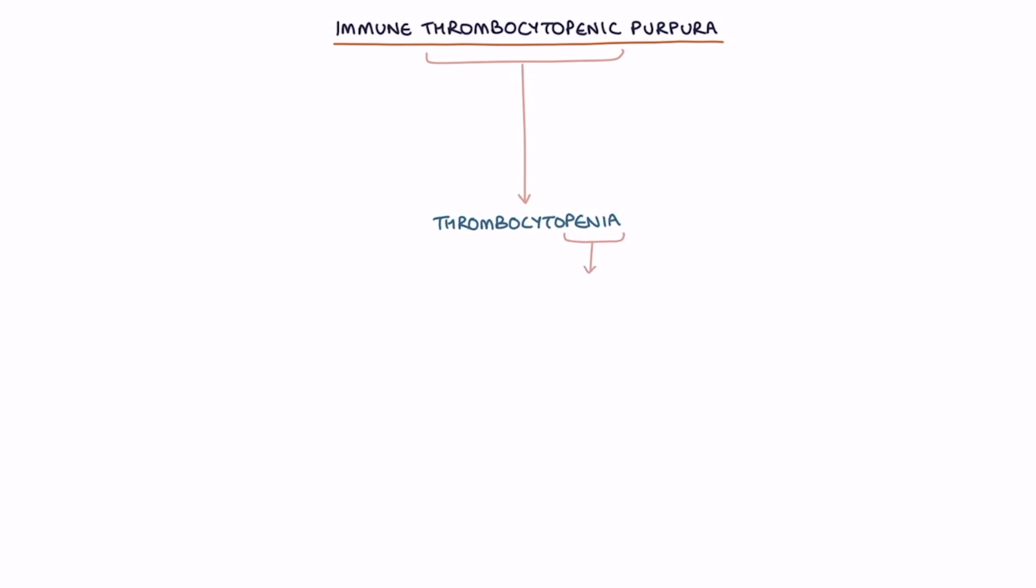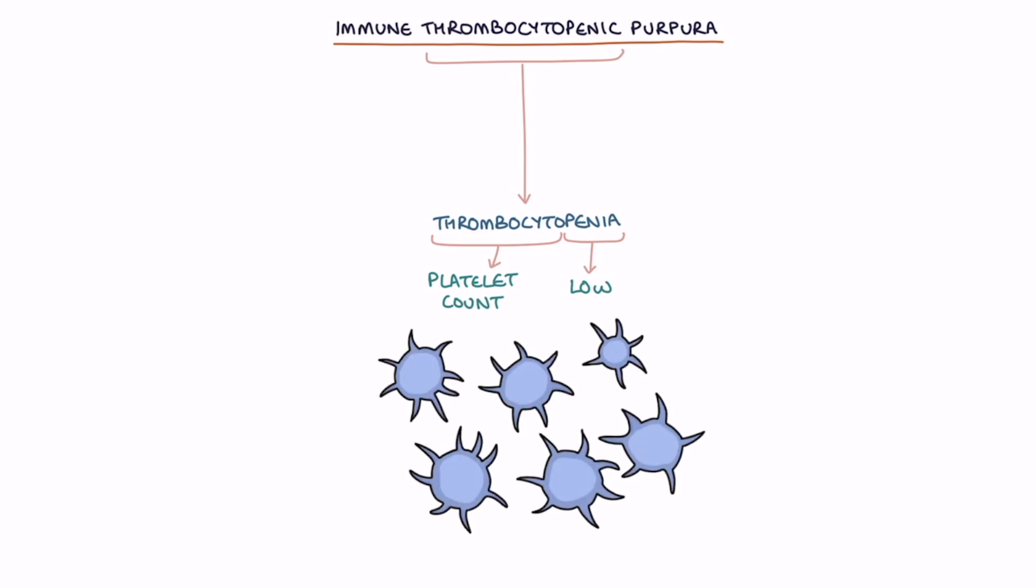Thrombocytopenia describes a low platelet count. Platelets are essential in helping to form blood clots and to stop bleeding. The normal platelet count in the blood is 150 to 450 times 10 to the power of 9 per litre.